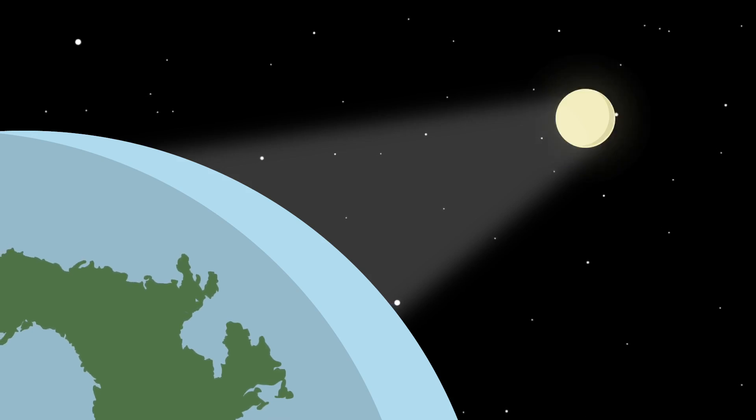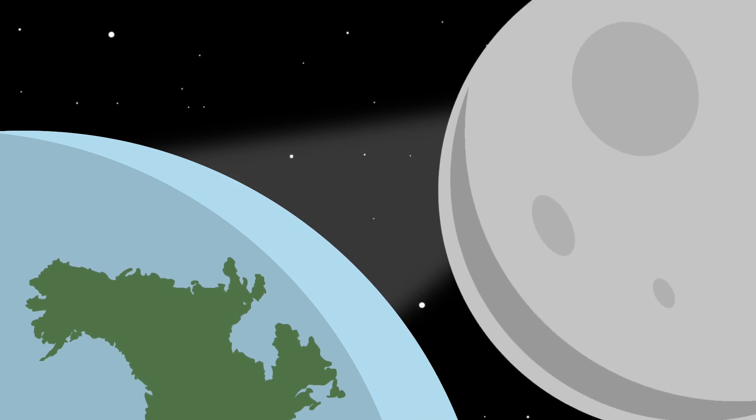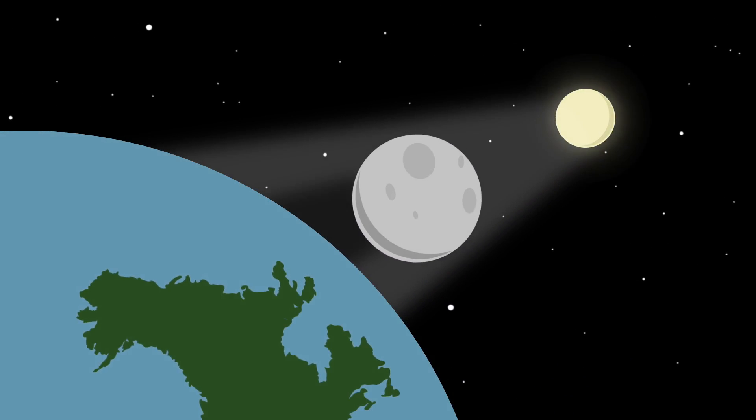But once every one to two years, a new moon passes between the Earth and our Sun and blocks the direct light.